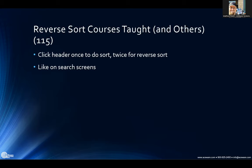Reverse sort on courses taught, student list, and other things — mainly with courses taught is what people were noticing. You could sort by a column, but it wasn't doing any reverse sorting until the 115 update. So now if you hit the header twice, it does a reverse sort — exactly like on any of the search screens in student manager, clicking the header and then doing a second click to reverse sort.